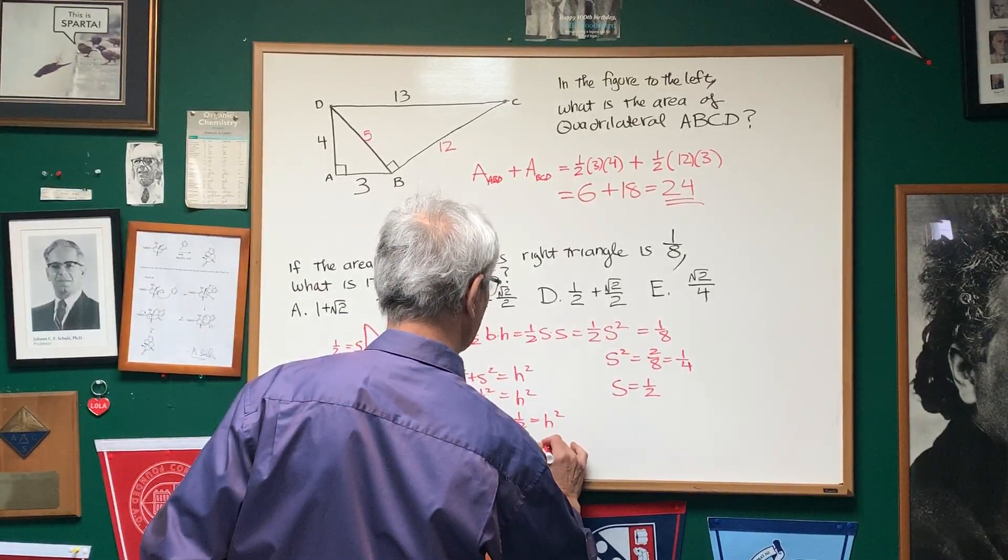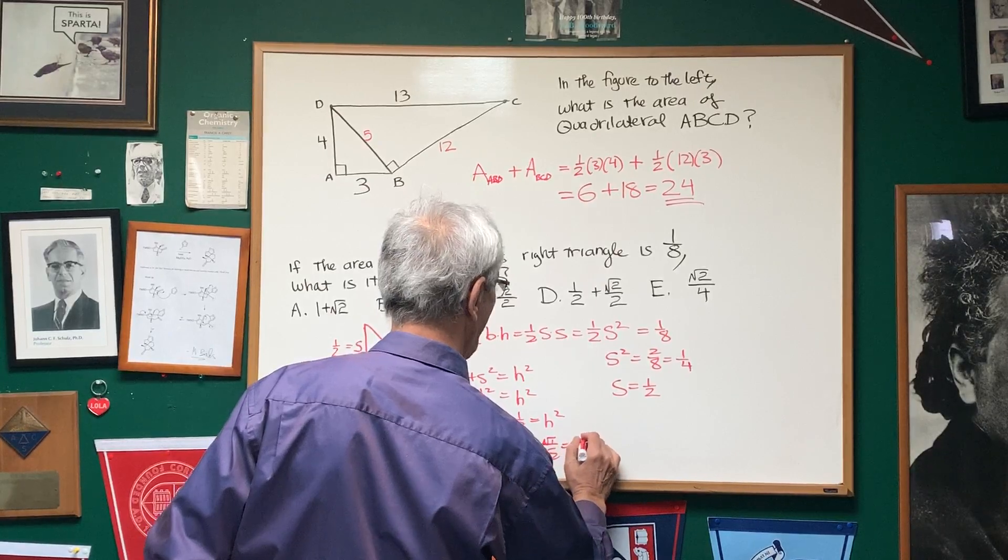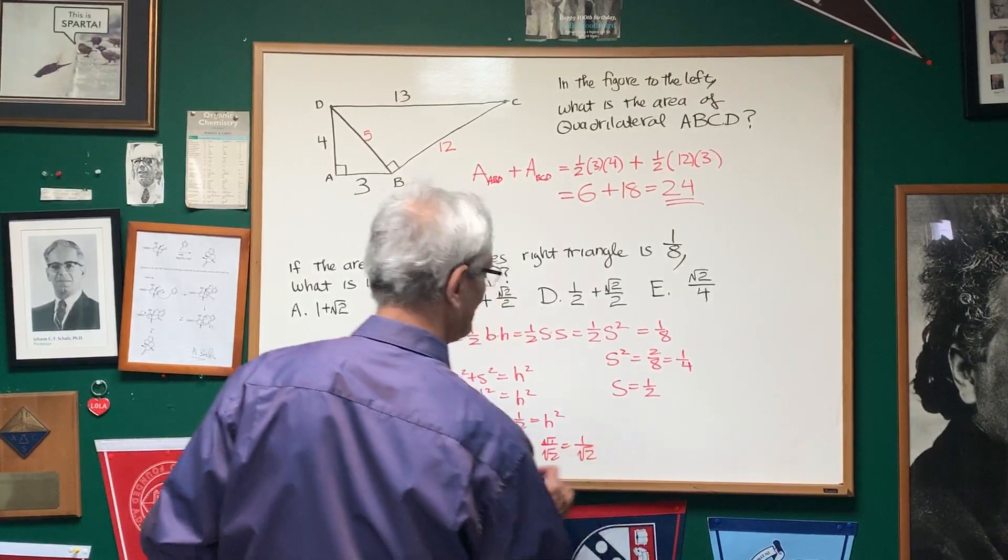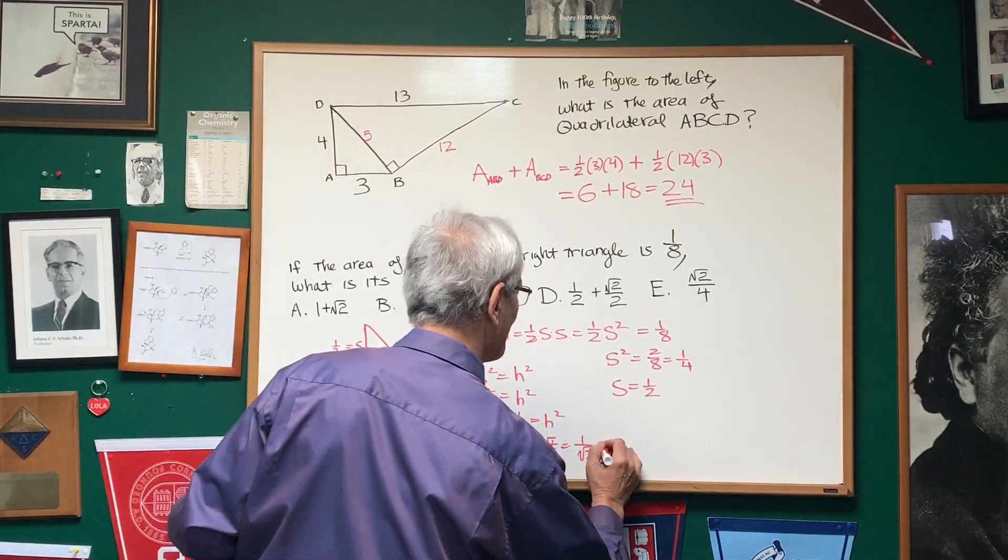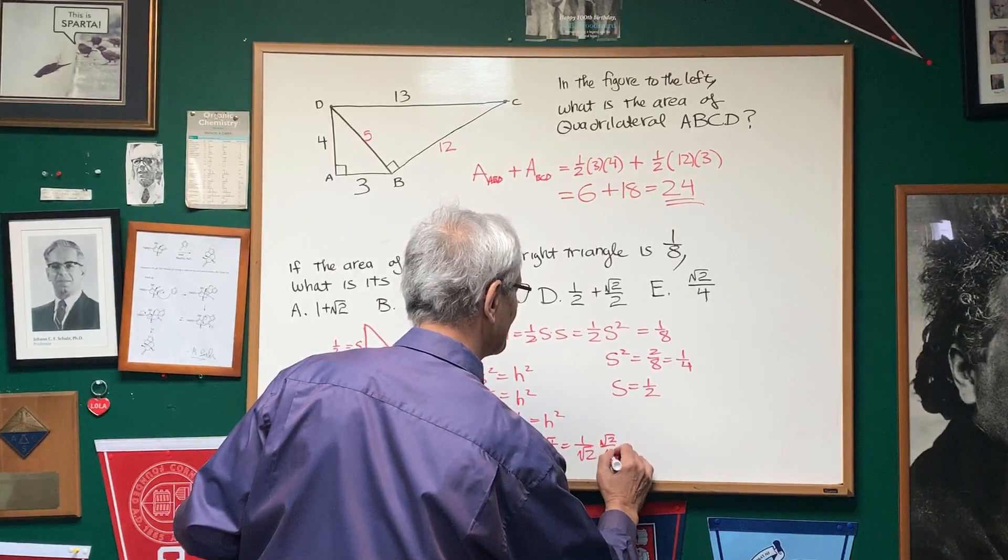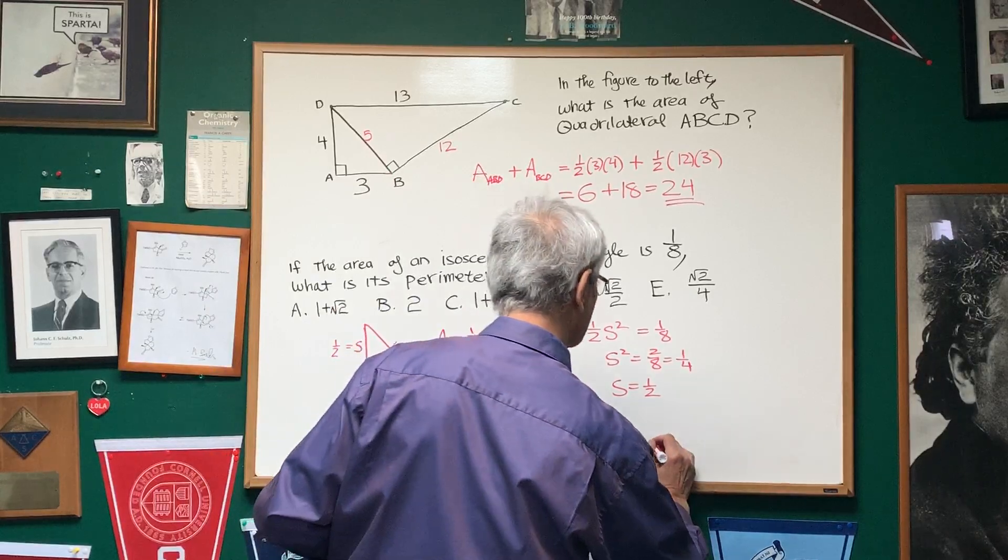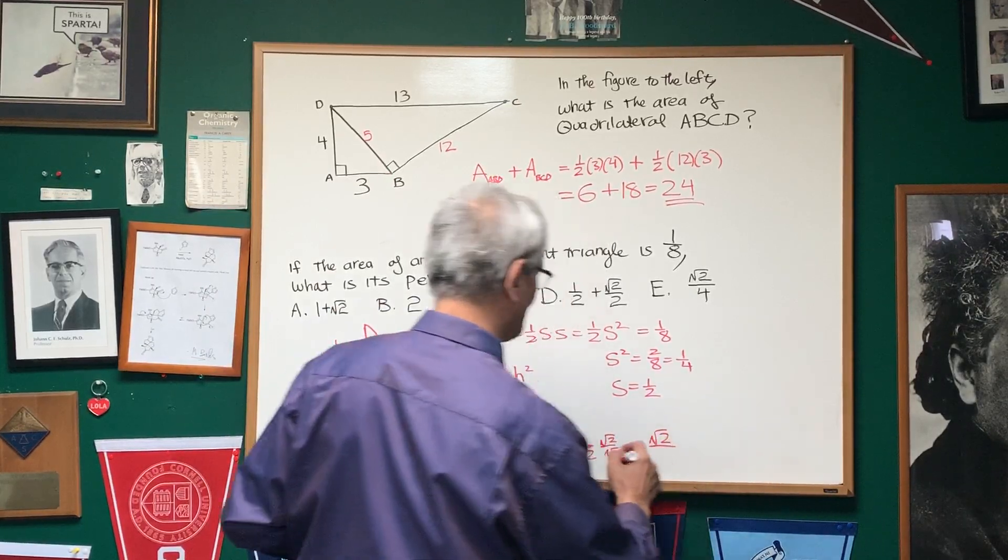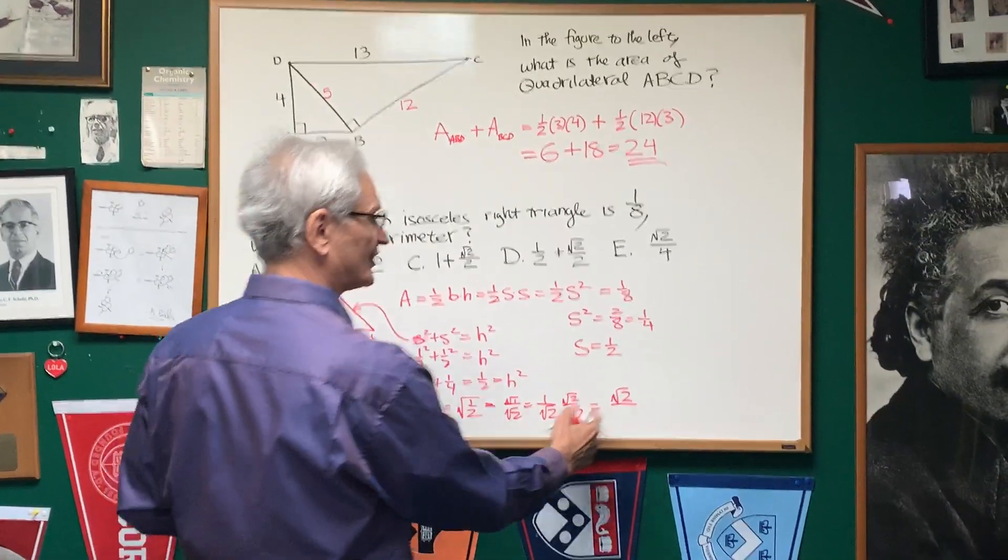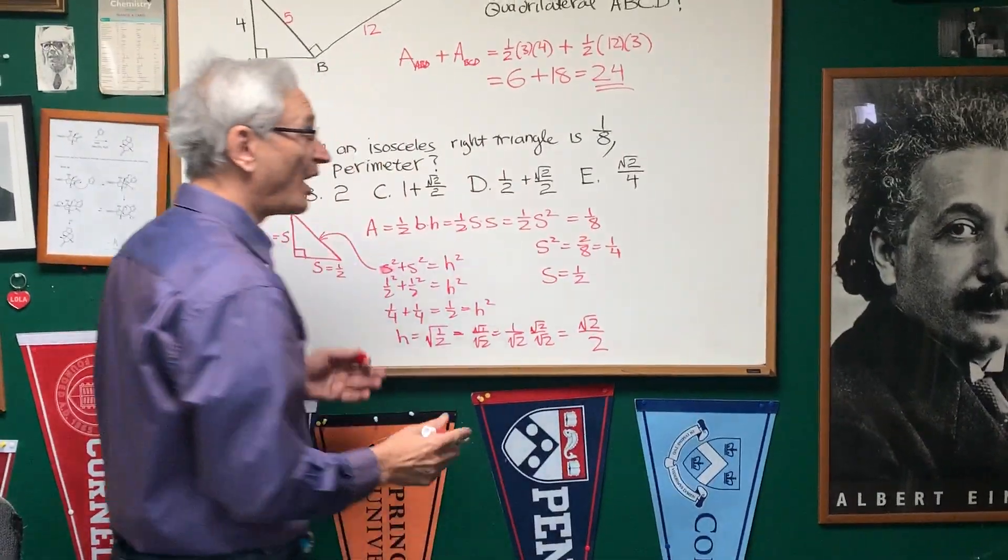I have the square root of one-half, which is the square root of one over the square root of two, or one over the square root of two. To rationalize this, I'm going to multiply numerator and denominator by the square root of two to get one times the square root of two in the numerator is the square root of two. In the denominator, the square root of two times the square root of two is two.